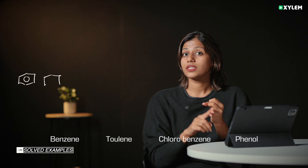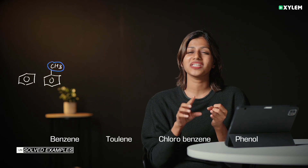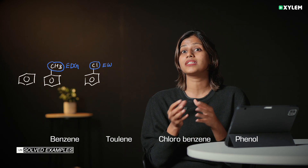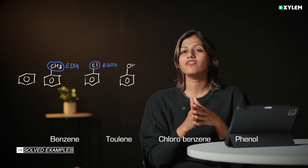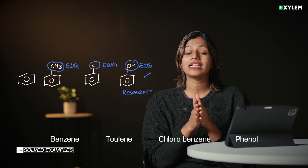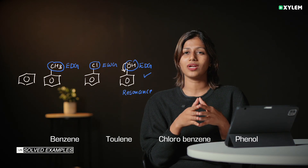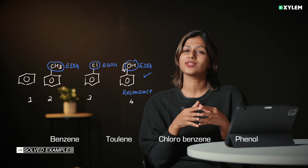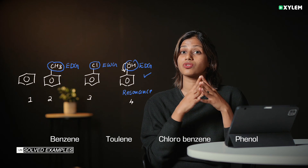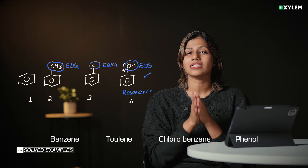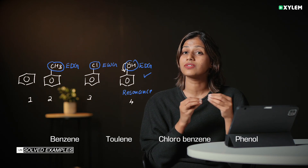Now let's look at the options. Benzene has no substituent. Toluene has a CH3 group, which is an electron donating group. Chlorobenzene has chlorine, which is an electron withdrawing group. And phenol — the oxygen provides strong resonance electron donation, making it strongly electron donating. The electron donating group increases reactivity towards the electrophilic reagent.